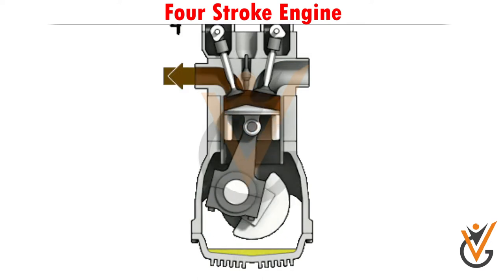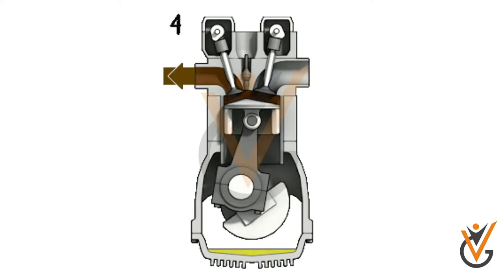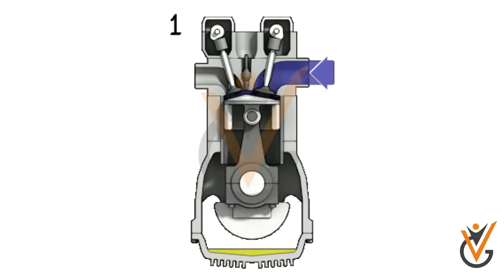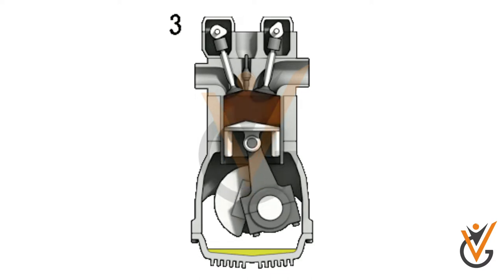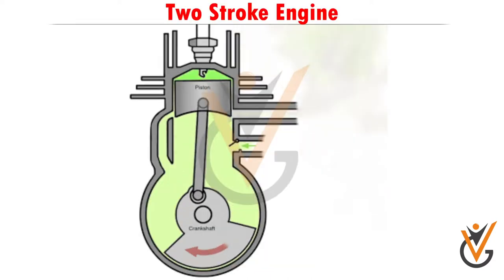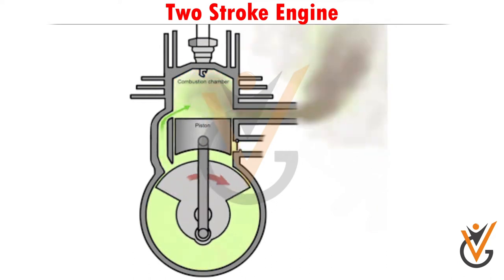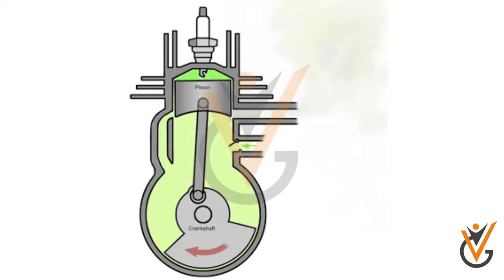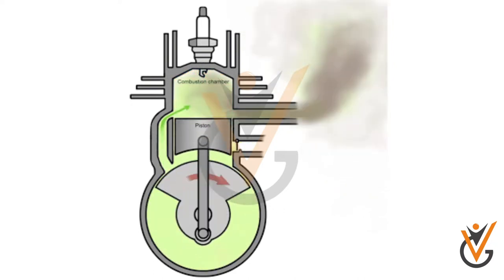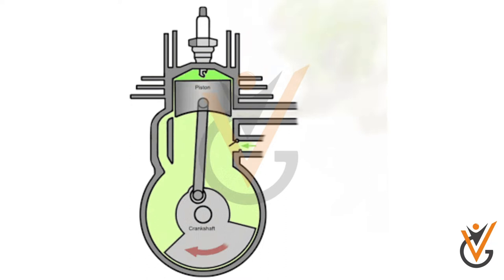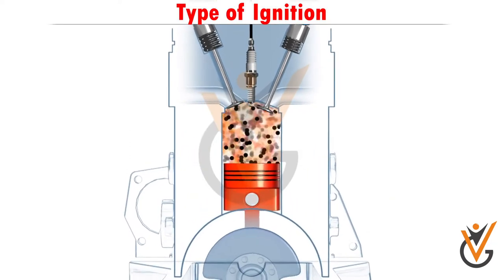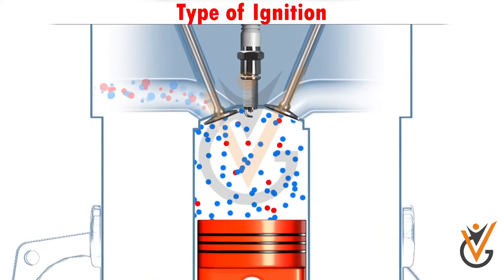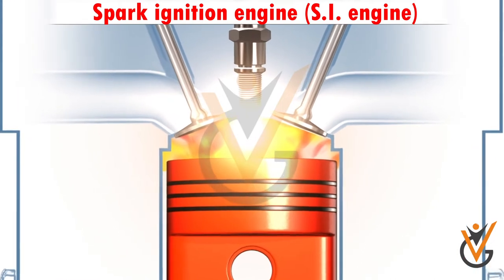A four-stroke engine is one in which the piston moves four times — two upward from BDC to TDC and two downward from TDC to BDC — in one cycle to produce a power stroke. A two-stroke engine is one in which the piston completes two movements — one from TDC to BDC and one from BDC to TDC — to produce a power stroke.